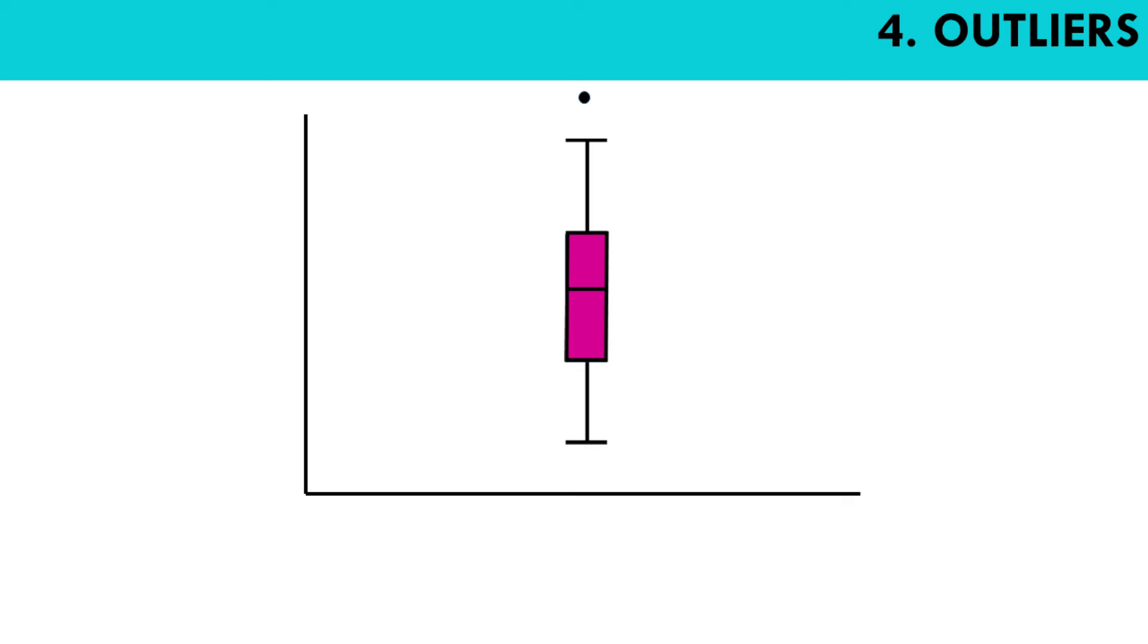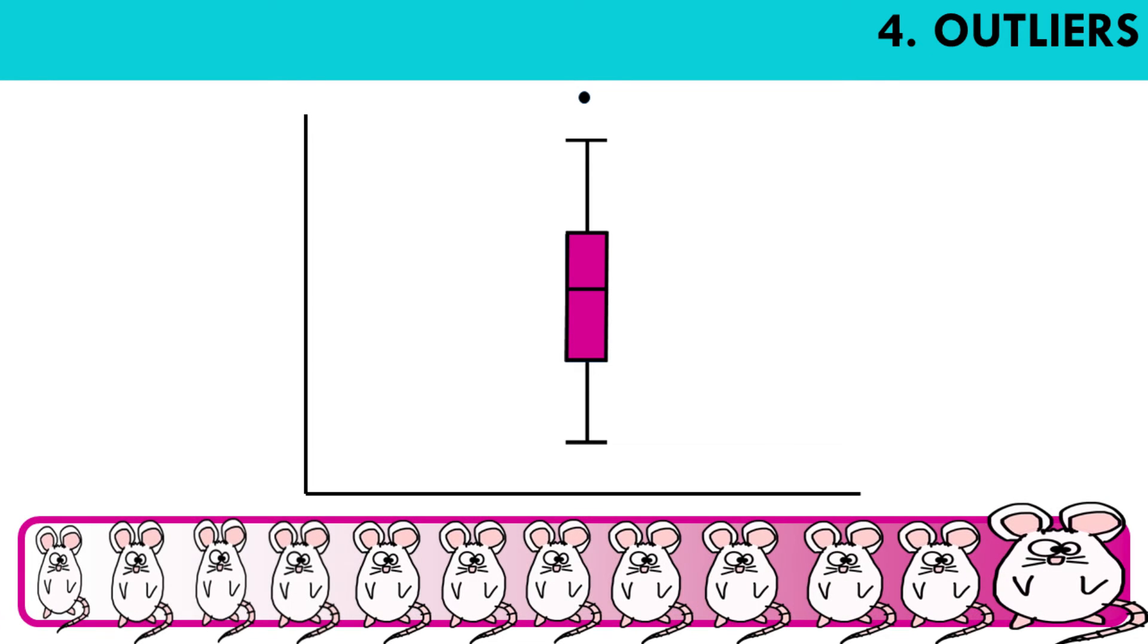Finally, we can also have a look at outliers. Outliers are just observations that are numerically distant from the rest of the data. So sometimes the whiskers of the box plots don't go all the way to the minimum and maximum, but they show 1.5 times the IQR, so the interquartile range. In other words, one and a half times the length of the box. Then the outliers, the values that fall outside this range, are shown as dots outside the whiskers.